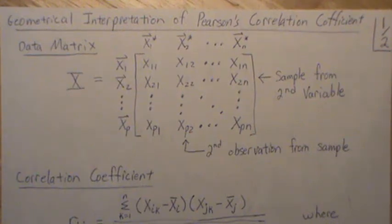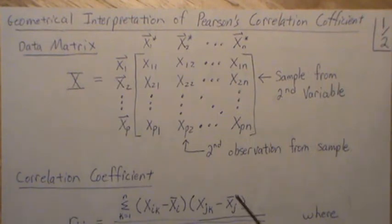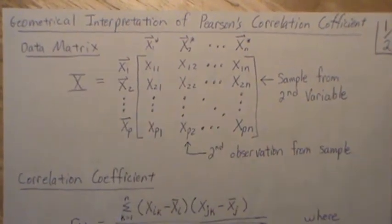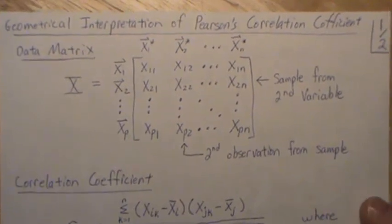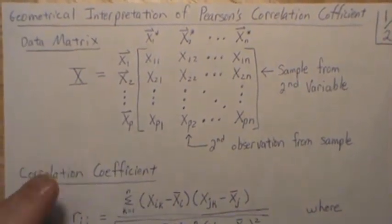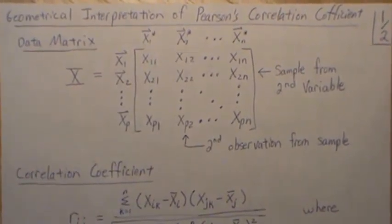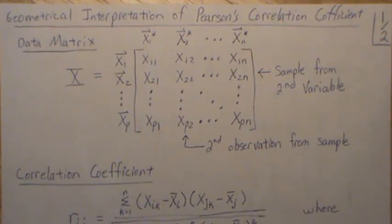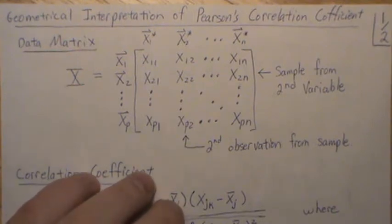Hello, this is the next video in a playlist that I'm calling Correlation, and we're going to put lots of different types of correlations in this playlist. In this one, we're going to discuss the geometrical interpretation of Pearson's correlation coefficient. And before we do that, let's look at some notation. Pearson's correlation coefficient is between two variables, but in this playlist we're going to look at partial correlation, coefficient of determination, and lots of different types.